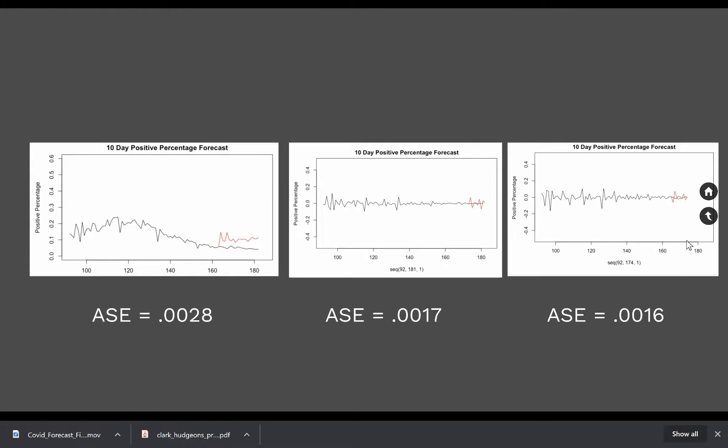And here are the results and the ASEs for those: 2.8, 1.7, 1.6 times 10 to the negative 3. Not as low as some of the other models we've seen previously.